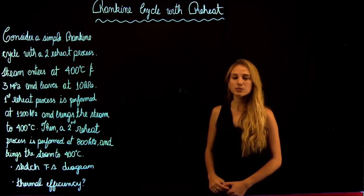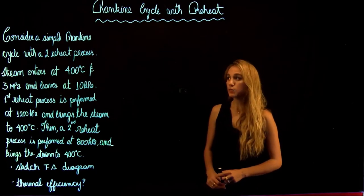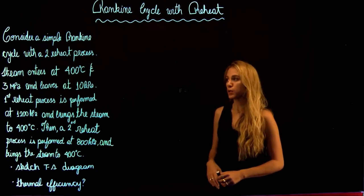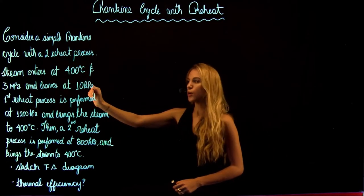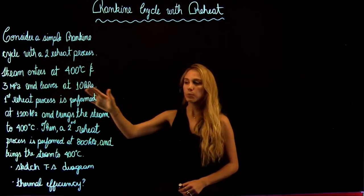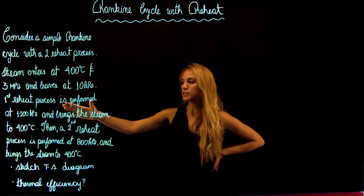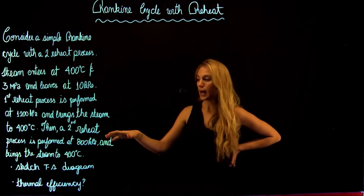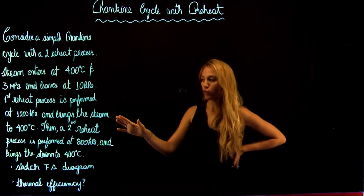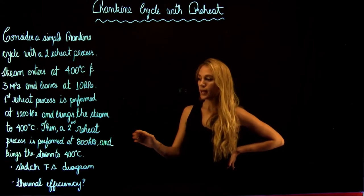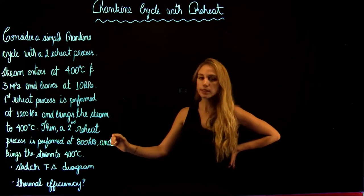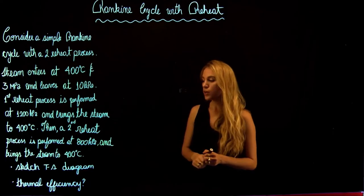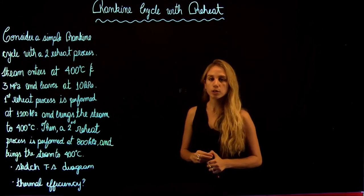Hello and welcome back to Thermodynamics 2 Tutorials with Maria. We're going to be solving a Rankine cycle with reheat. We are asked to consider a simple Rankine cycle with two reheat processes where the steam enters at 400 degrees Celsius with a pressure of 3 MPa and leaves with a pressure of 10 kPa. The first reheat is at 1200 kPa bringing steam to 400°C, and the second reheat is at 800 kPa also bringing steam to 400°C. We are asked to sketch the TS diagram and find the thermal efficiency.